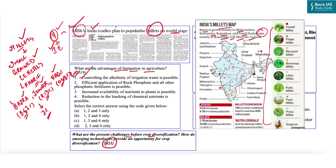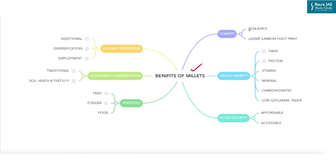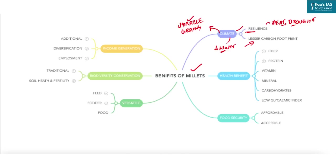Millets have been identified as a climate-resilient crop because they can adapt to extreme weather conditions such as heat, droughts, and floods. They require less water, fewer fertilizers and pesticides than other crops, and can be grown on marginal lands. As a result, they help in reducing carbon footprint, making millets useful in mitigating climate change. Because of this, they are also known as miracle greens or crops of the future.